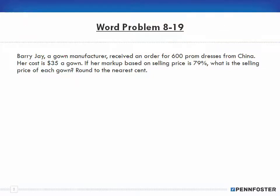So Barry Jay, a gown manufacturer, received an order for 600 prom dresses from China. Her cost is $35 a gown. If her markup based on selling price is 79%, what is the selling price of each gown? So this 600 prom dresses is irrelevant, has nothing to do with solving this problem because it's asking us what is the price of each gown.